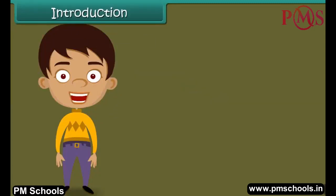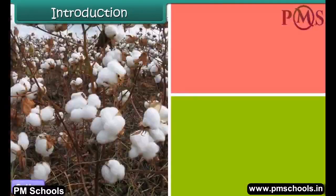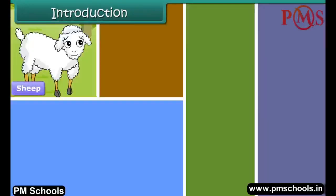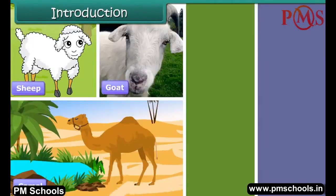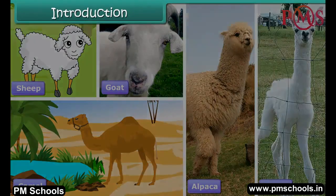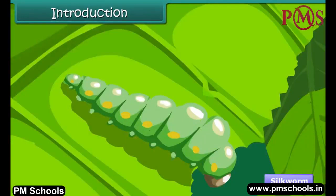Fibers can be obtained from both plants and animals. Some familiar plant sources of fiber are cotton, jute, and linen. Some well-known animal sources of fiber are sheep, goat, camel, alpaca, and llama. If we treat insects as different from animals, then the silkworm can be classified as an insect source of fiber.